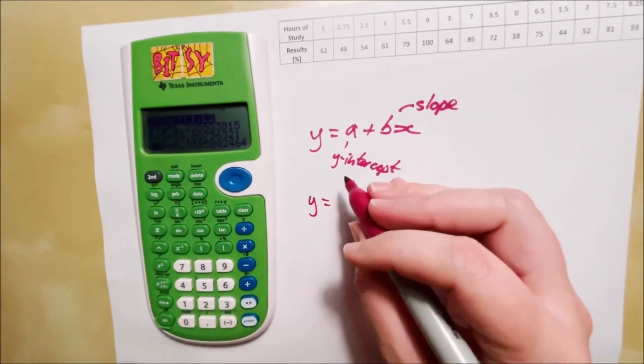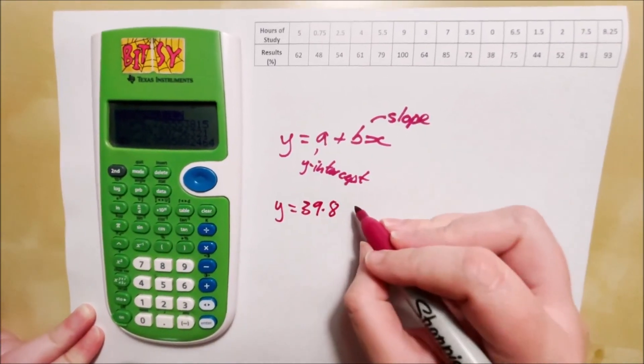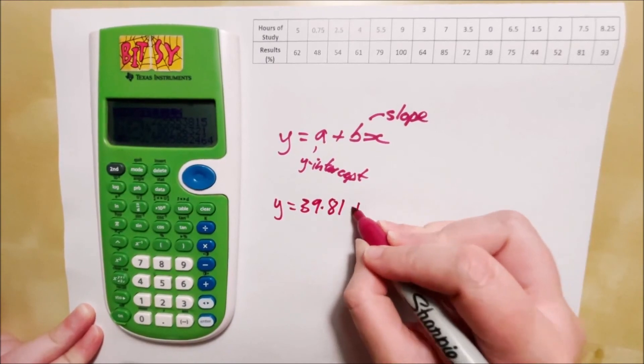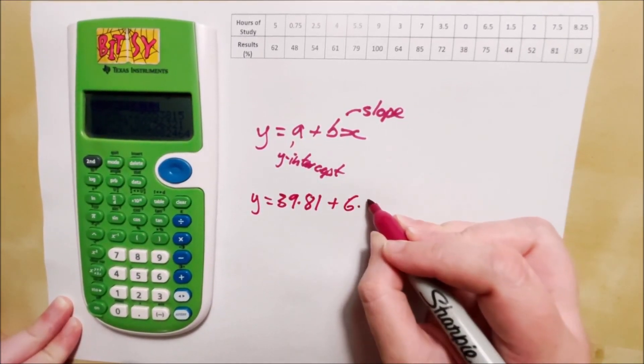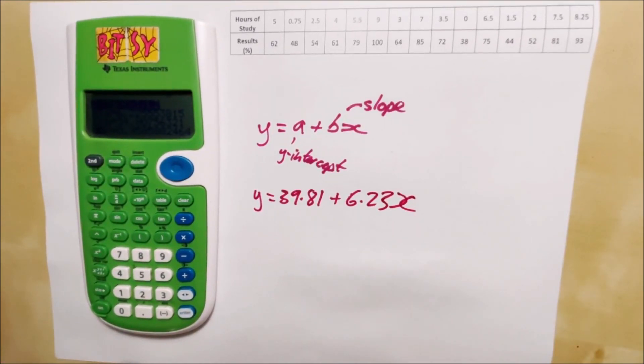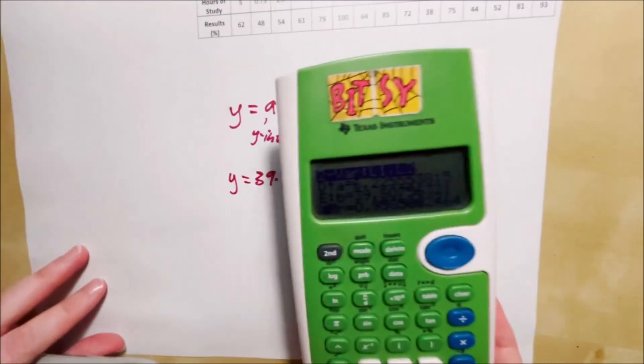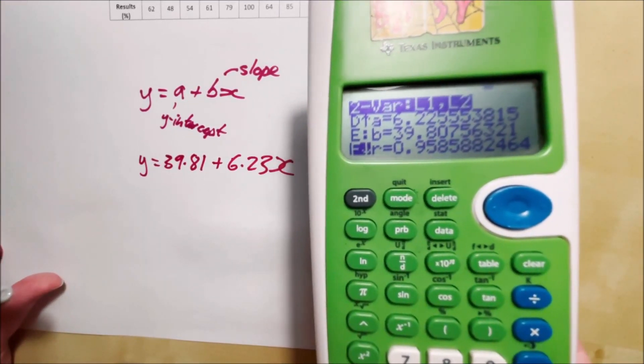So this would be y equals 39.881 to two decimal places, plus 6.23x. Okay, and you can see that a and b are the other way round.